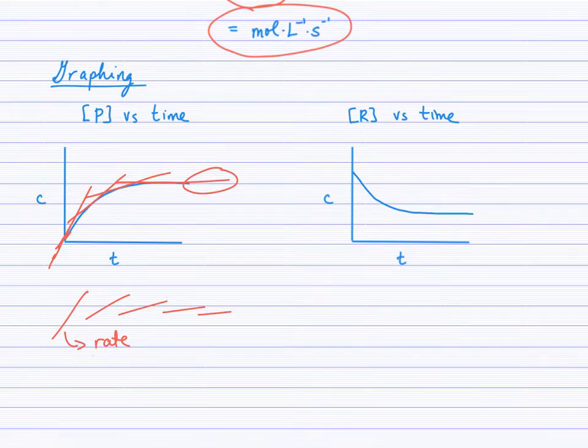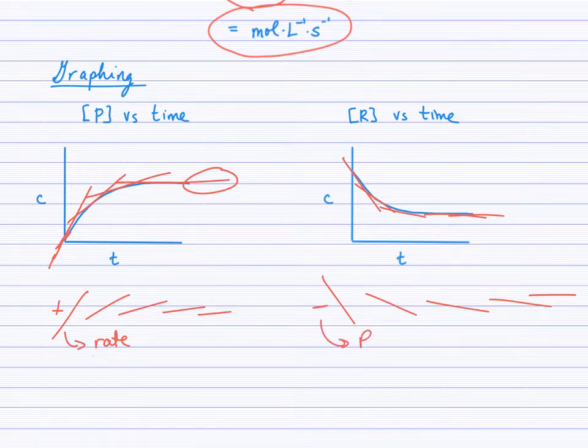What's happening on the reactant side? We start with a certain concentration, there it is, not zero, and now we see a negative slope. This was a positive slope on this side. Now we see a steep negative slope of the tangent. That curve, or the slope of the tangent, changes and gets more and more shallow until it's horizontal.